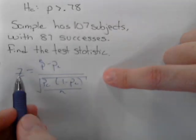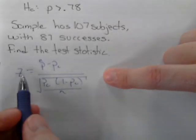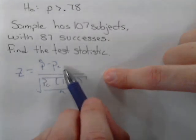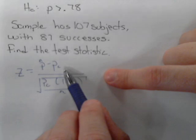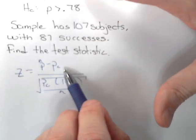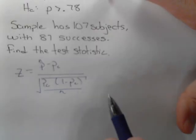The formula for the test statistic for a single sample proportion is p-hat, which is the sample proportion, minus the observed or previously known proportion, which in this case is 0.78. It's always what the null and alternative hypotheses are comparing to.